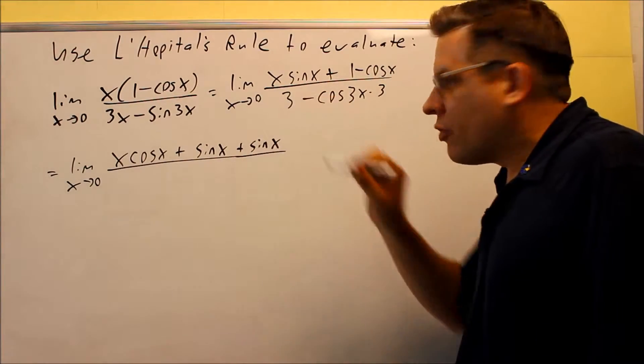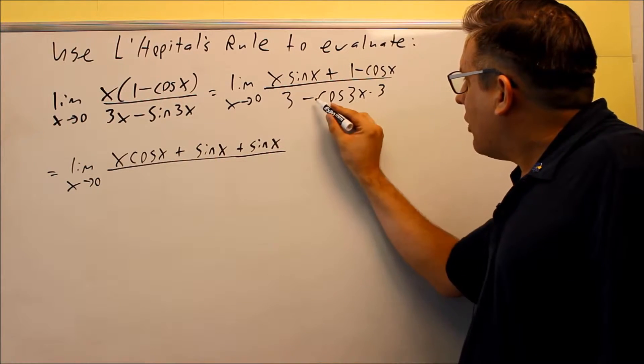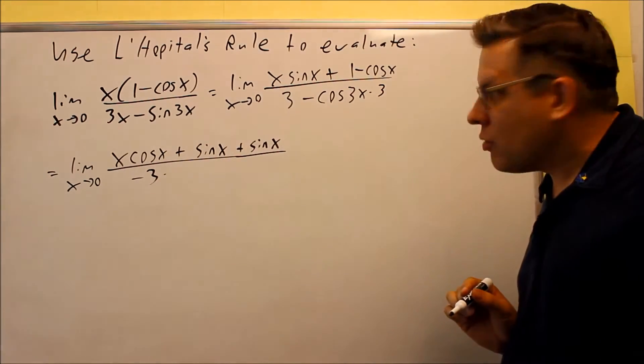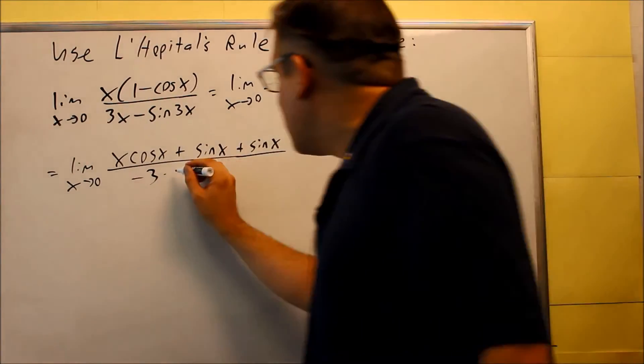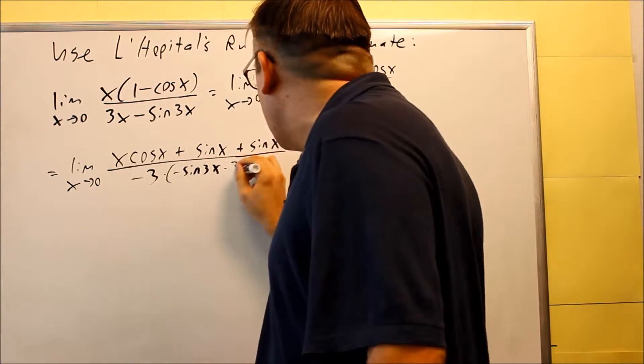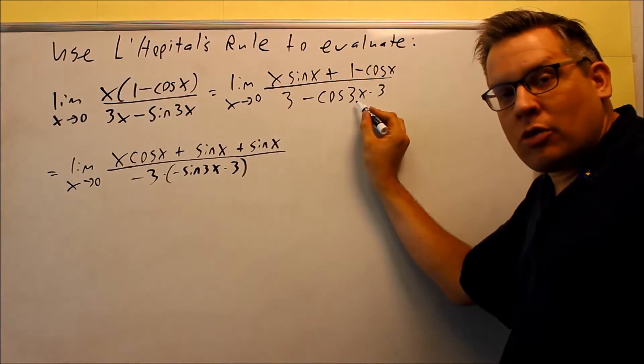Let's take a look at the bottom. Derivative of 3 is 0. And then, this part, I have a negative 3, which I have here. And I'm multiplying it by the derivative of cosine 3x. Derivative of cosine is negative sine, so I have negative sine 3x. And then, don't forget again, you've got to multiply by the 3, doing the chain rule once again.